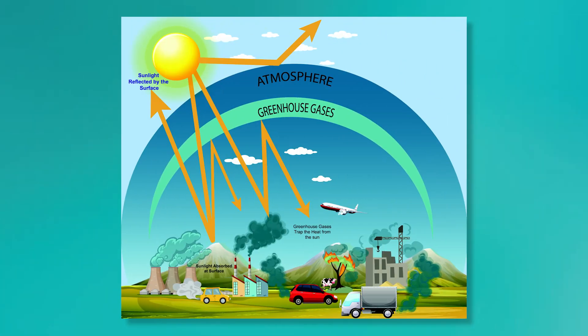The greenhouse effect is critical for life on Earth, and the gases in the atmosphere are balanced to maintain the right climate. But human activities can throw off this balance. When the balance is disturbed, it can lead to climate change, something we'll continue to explore in this course.